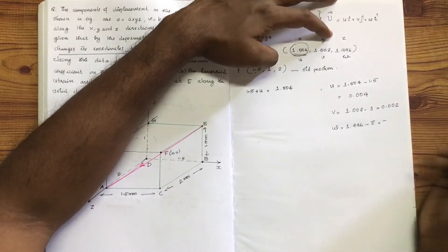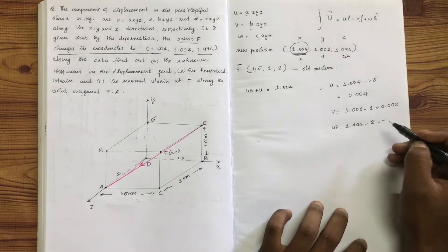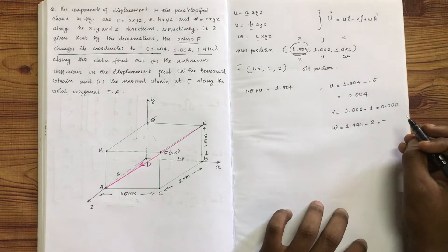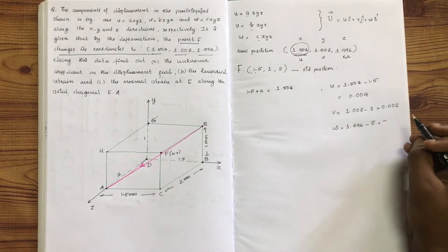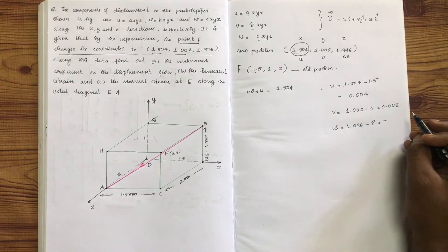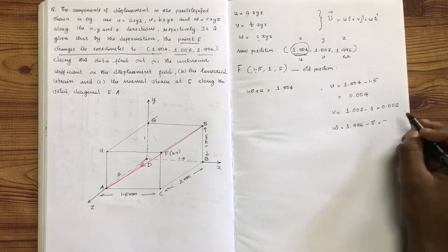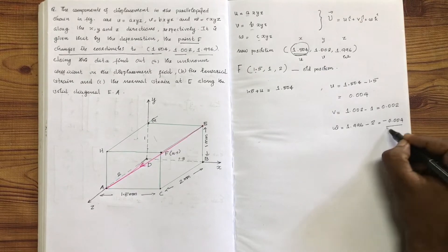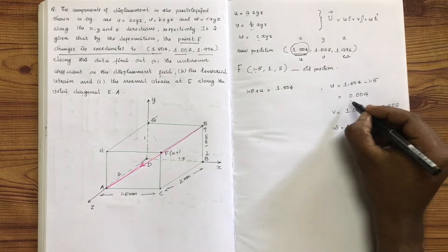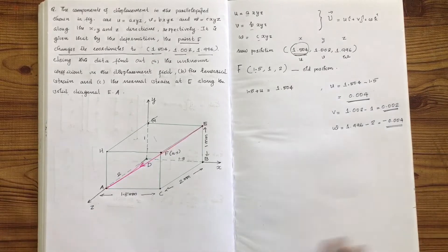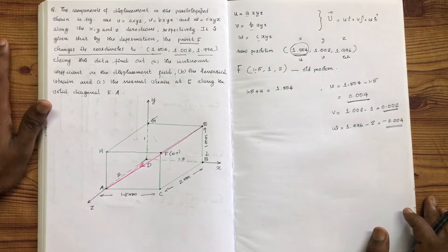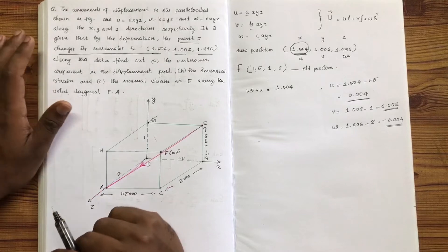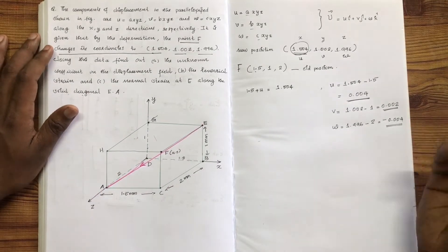The w value is minus 0.004, which is a negative value indicating displacement in the negative y-axis and negative z-axis — a negative direction displacement.